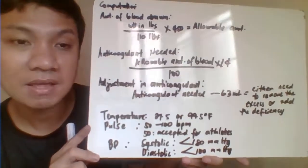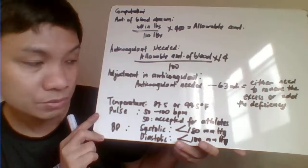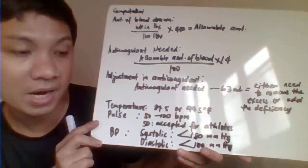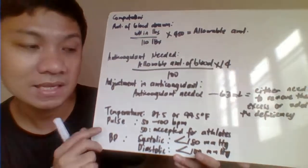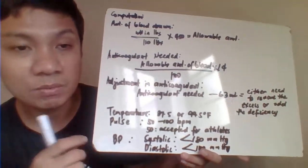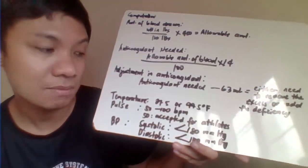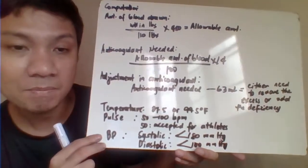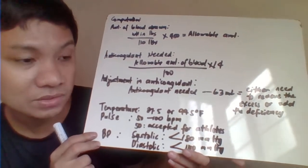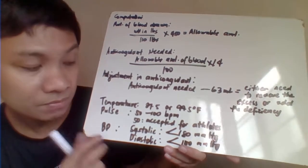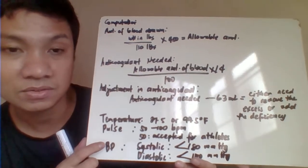For temperature requirements, the patient should be at most 37.5 degrees Celsius or 99.5 degrees Fahrenheit. For pulse rate, it should be 50 to 100 beats per minute, but a patient with a rate lower than 50 — such as an athlete — is still acceptable. For blood pressure, systolic should not exceed 180 mmHg and diastolic should not exceed 100 mmHg.